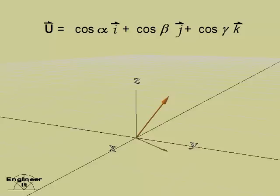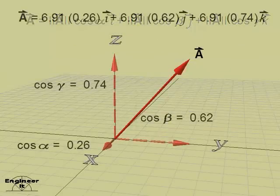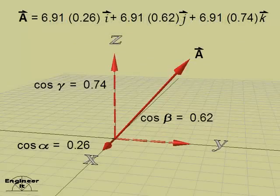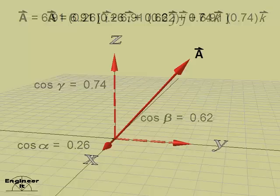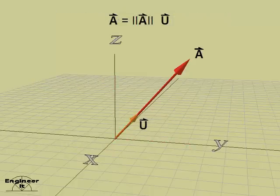Only two directional angles are required to set the direction of a vector. Revisiting the example that defined vector A, the magnitude of vector A can be factored out. So vector A may be specified by the magnitude of vector A multiplied by the unit vector.